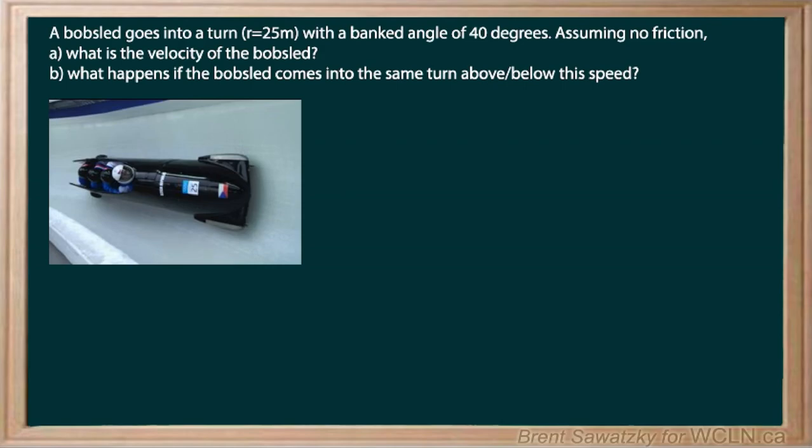So we have a bobsled here going into a turn on its track and getting up on the wall so that it's at a 40 degree angle there. And what is the velocity of the bobsled to start off with?